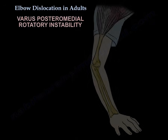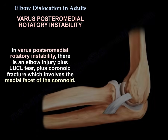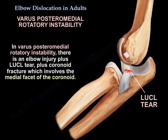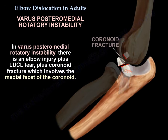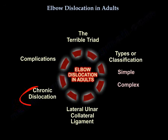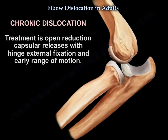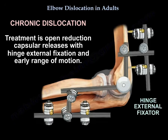In varus posteromedial rotatory instability, there is an elbow injury plus a lateral ulnar collateral ligament tear plus a coronoid fracture involving the medial facet of the coronoid. For chronic dislocation, the treatment is open reduction, capsular releases with a hinge external fixator, and early range of motion.